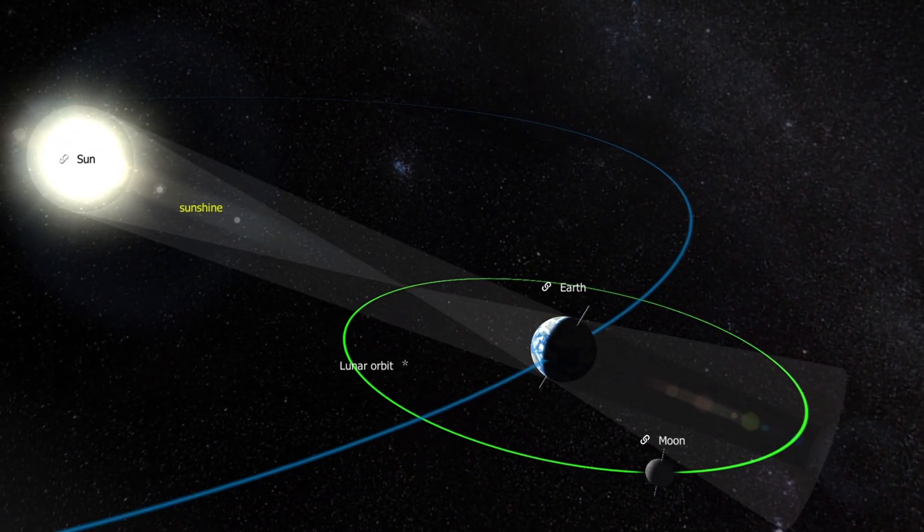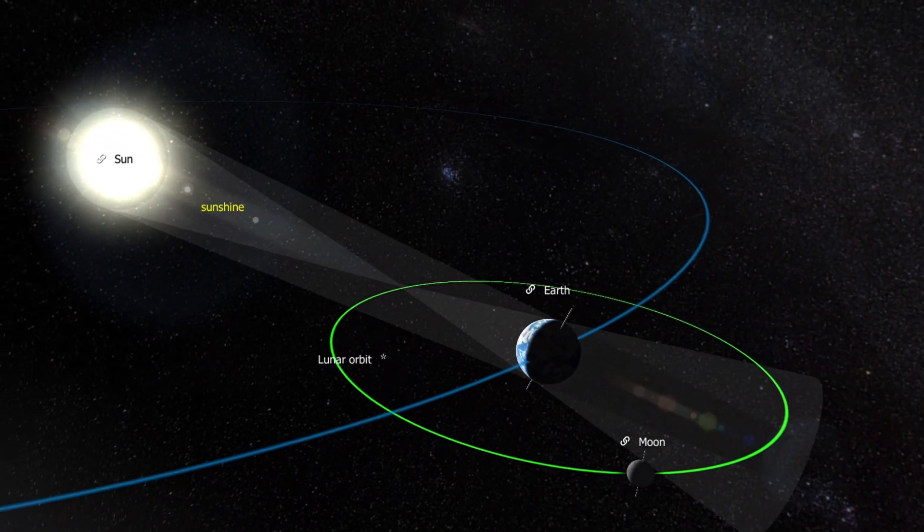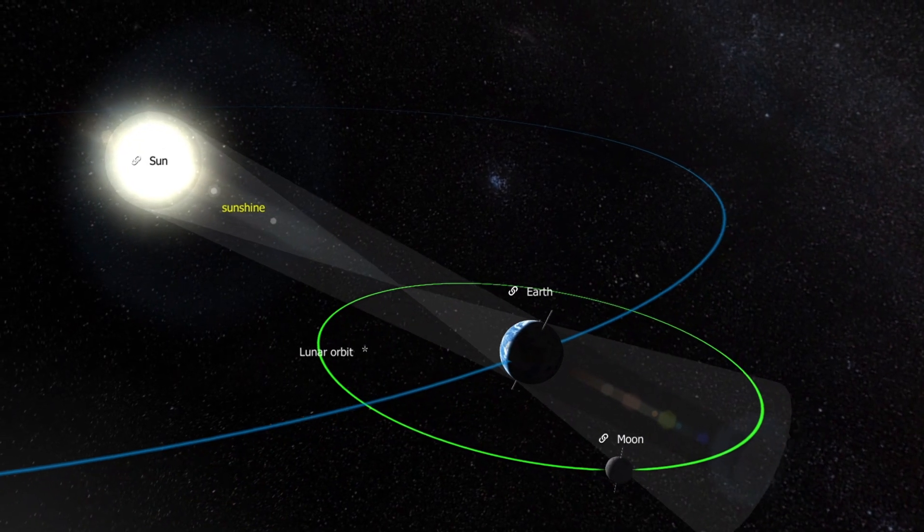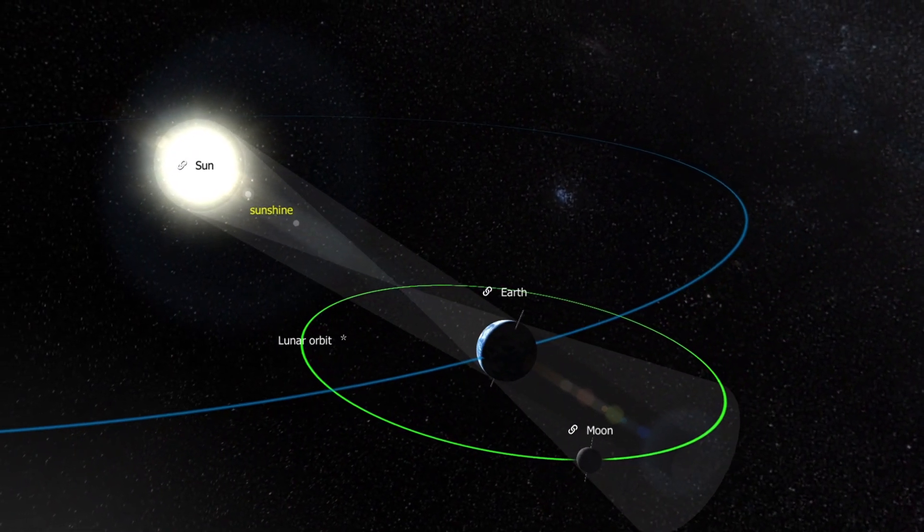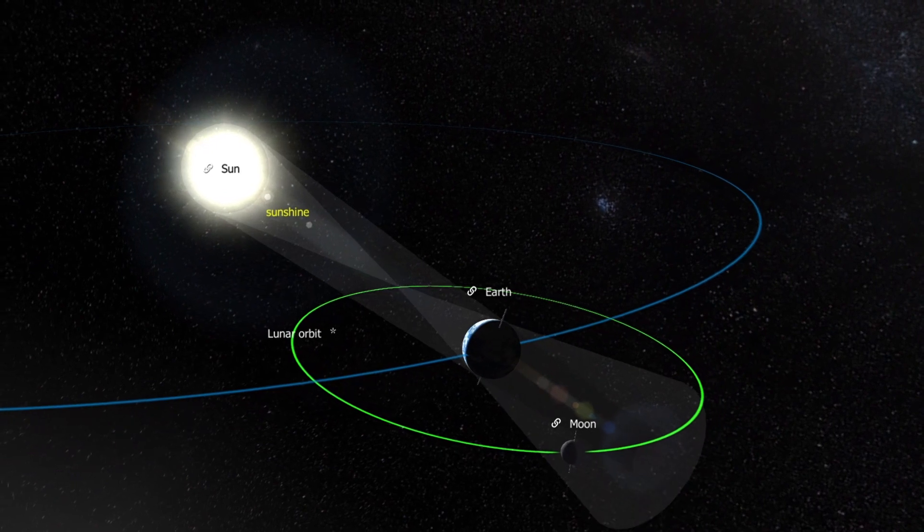A lunar eclipse occurs when the Moon passes into the Earth's shadow. For a thorough understanding of the phenomenon, we need to clarify the positions of the Moon and Earth relative to each other.